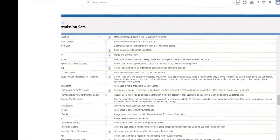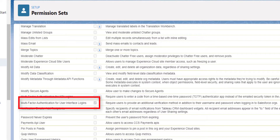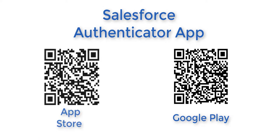We're going to be using the Salesforce Authenticator app in this example. Enabling multi-factor authentication is simple. All you have to do is assign the multi-factor authentication for user interface logins to a permission set and then to your users. The first step is downloading the app. Scan the QR code to download the app from either the Apple or Google stores.